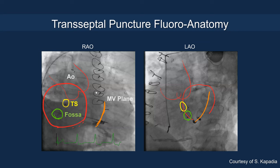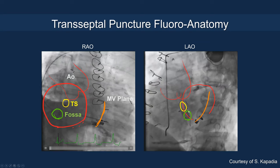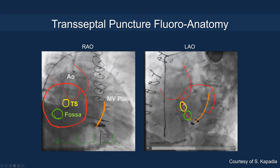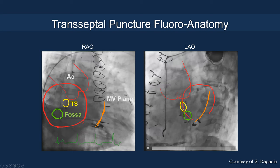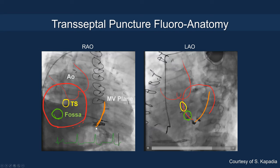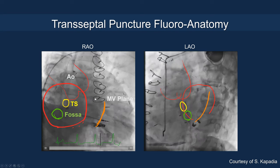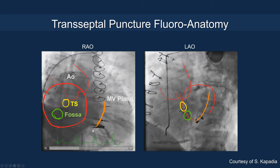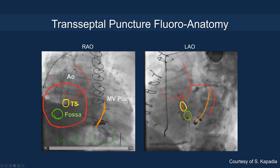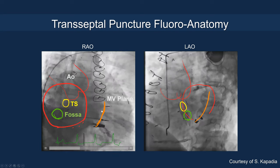Here is an example of fluoroscopic anatomy. On the RAO view and the LAO view, the LAO view shows you whether you're going toward the septum or toward the left atrium. You can see a MitraClip or similar device as a reference point for the interatrial septum. On the RAO view, you can see how far you are from the mitral annulus. Landmarks such as mitral annular calcification or circumflex stents indicate the AV groove, helping you appreciate posterior position and height relative to the mitral annulus.